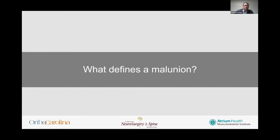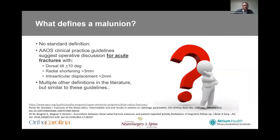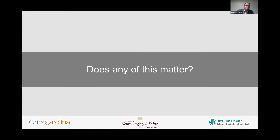So what actually defines a malunion? There's no real standard definition. The AAOS clinical practice guidelines have suggestions for operative discussions in acute fractures — dorsal tilt greater than 10 degrees, radial shortening, and intra-articular displacement — but they don't really define what constitutes a malunion. There are multiple definitions in the literature, many very similar to these guidelines. The real question is: does any of this actually matter?